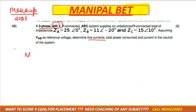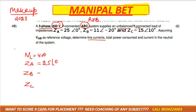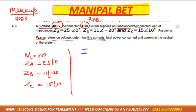First, they have given the line voltage 400 volts. It is a star-connected system with ABC (RYB) sequence and an unbalanced load. The separate impedance values are: Za = 25∠0°, Zb = 11∠-20°, Zc = 15∠10°. Assuming VaB as the reference voltage, write down the given part first — that is always the starting point.